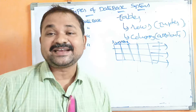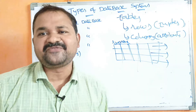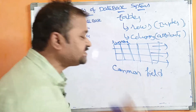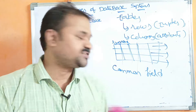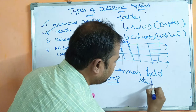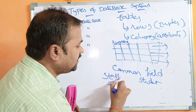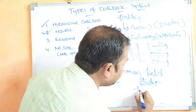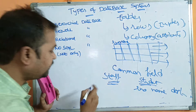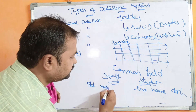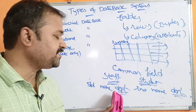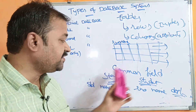We can establish a relationship between two tables with the help of a common field. For example, consider a student table with fields roll number, name, and department, and a staff table with fields staff ID, name, and department. Here, department is the common field, so by using the department field, we can establish the relationship between these two tables.